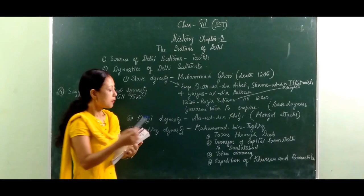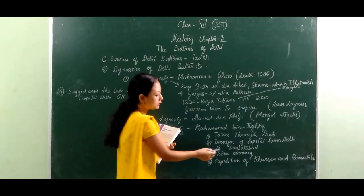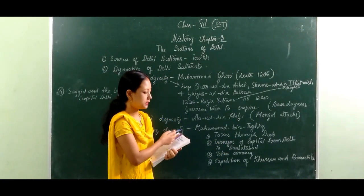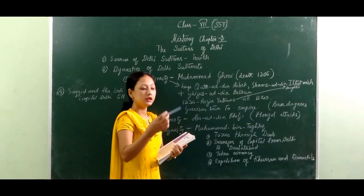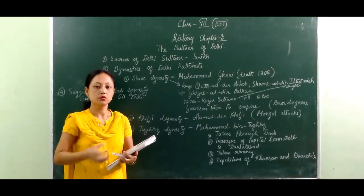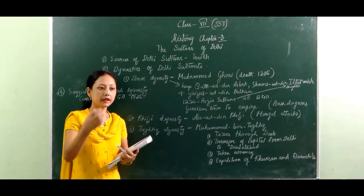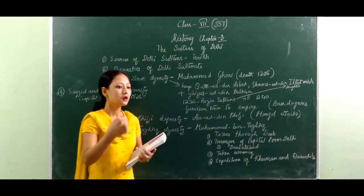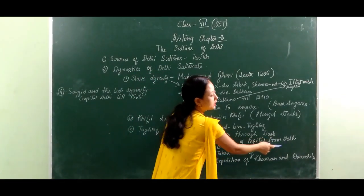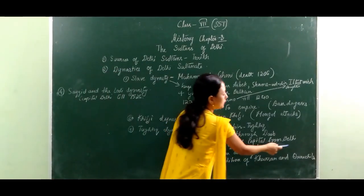Next, Muhammad bin Tughlaq transferred his capital from Delhi to Daulatabad. He thought Daulatabad would be a better capital for his dynasty, as it was located in the center of his rule. But later, when he was attacked by many foreigners, he was forced to transfer the capital from Daulatabad back to Delhi.